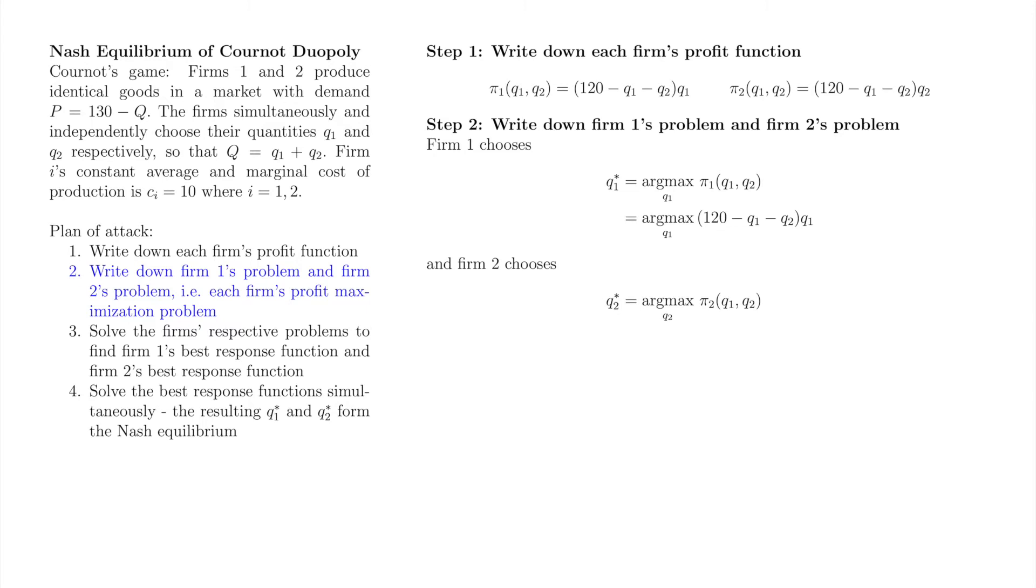Now we'll write down firm 2's problem. Firm 2 chooses q2 star which maximizes its profit. The q2 under the argmax indicates that firm 2 chooses q2 but does not choose q1. We'll replace pi2 of q1 q2 with the expression we found in step 1.